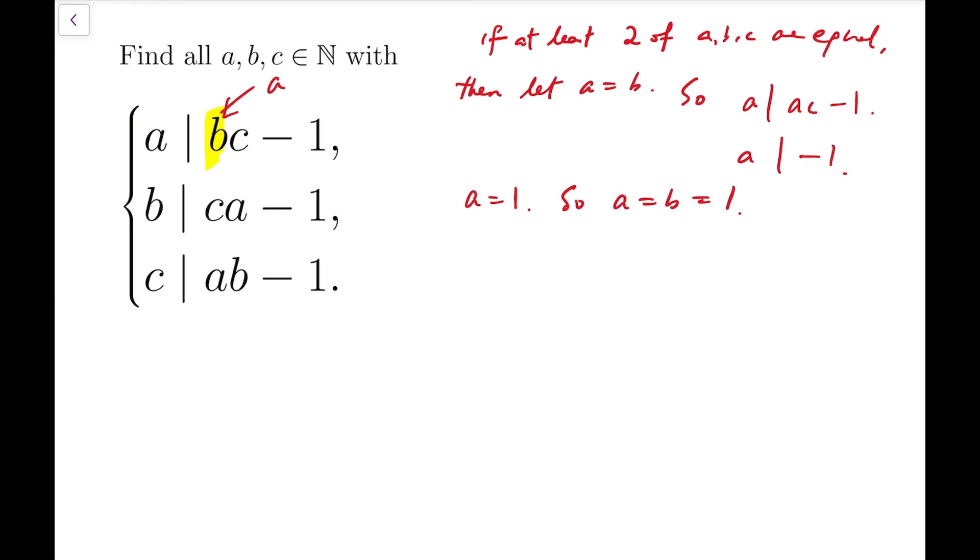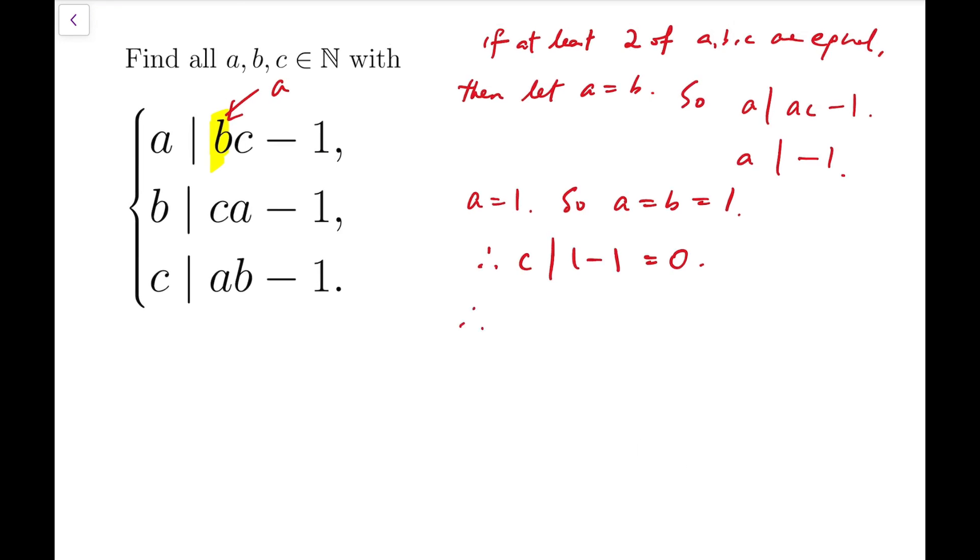Now if both A and B are 1, then C divides 1 minus 1, which is 0. Well, that means there is actually no restriction on the value of C because any natural number will divide 0. 0 is just equal to 0 times the natural number, so clearly all natural numbers divide 0. So that means I can say this is an ordered pair, and of course we have its permutations.